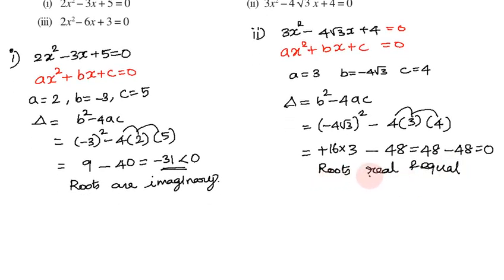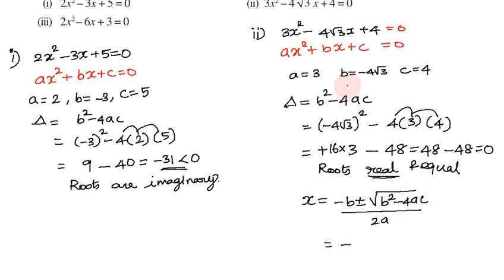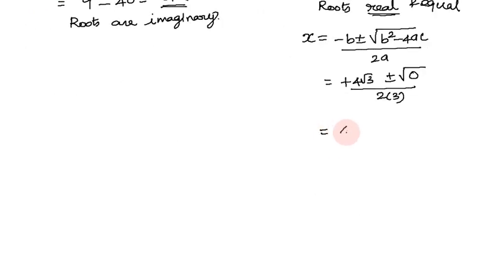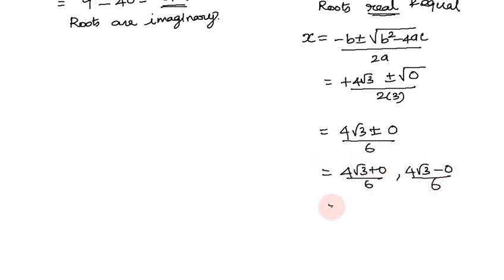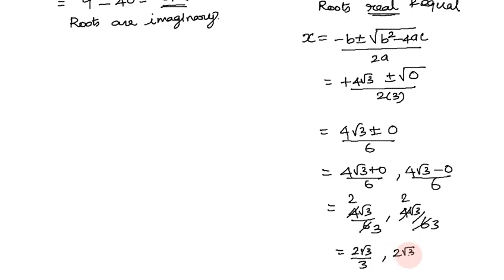Since real roots exist, we can find them using the formula x = (-b ± √(b² - 4ac)) / 2a. With b = -4√3 and Δ = 0: x = (4√3 ± 0) / (2 × 3) = 4√3 / 6. Simplifying by cancelling 2: x = 2√3/3, 2√3/3.